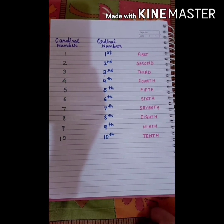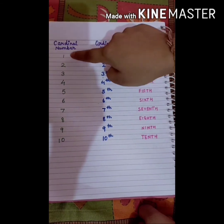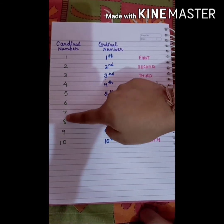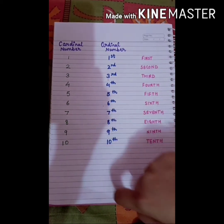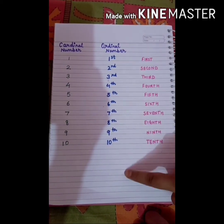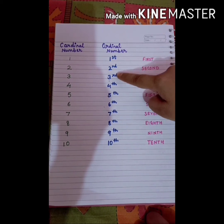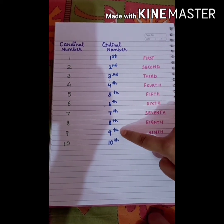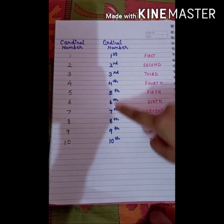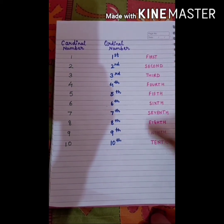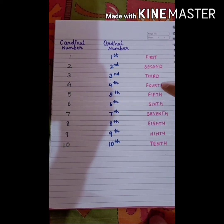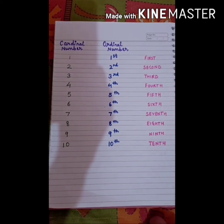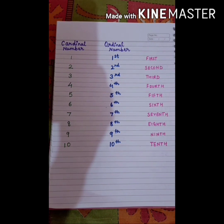So have a look at this table. These are cardinal numbers: 1, 2, 3, 4, 5, 6, 7, 8, 9, 10. These are ordinal numbers: 1st, 2nd, 3rd, 4th, 5th, 6th, 7th, 8th, 9th, 10th. And these are ordinal words: first, second, third, fourth, fifth, sixth, seventh, eighth, ninth, tenth. So that's all about this topic.